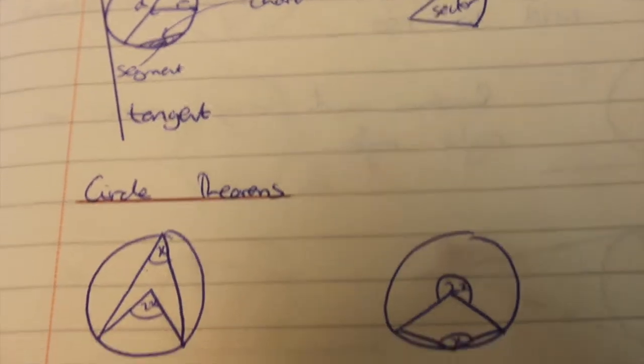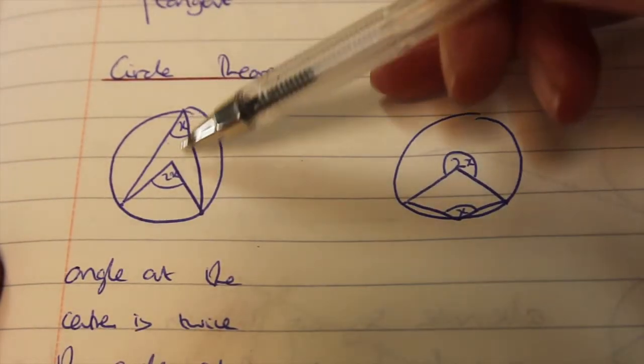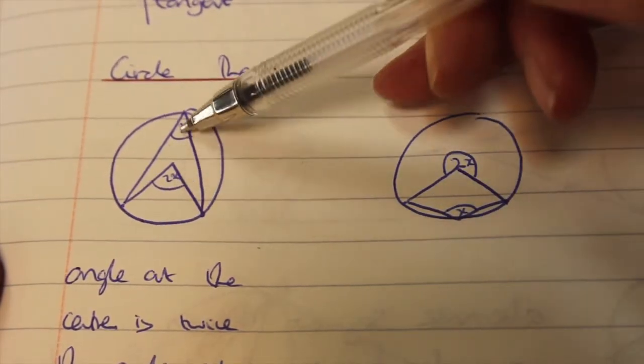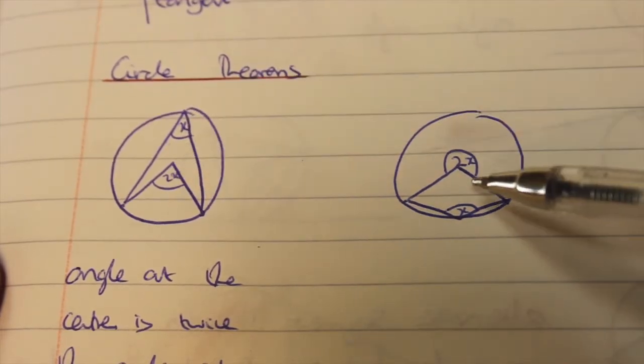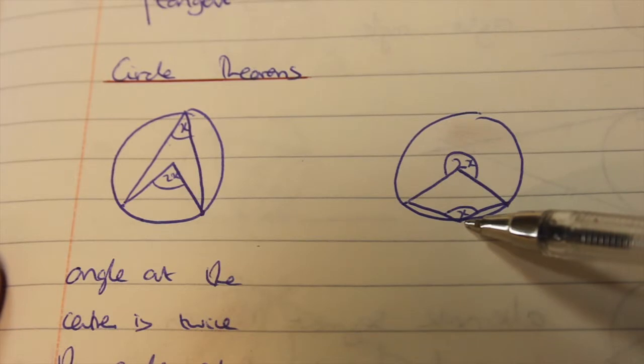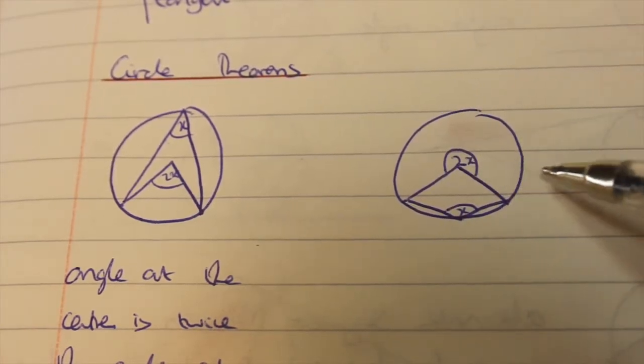Circle theorems. These need to be learned off. The angle at the center is twice the angle at the circumference. If that's x that's 2x. Just watch the backwards ones can be quite hard to see. So the angle at the circumference is x so the middle one is 2x.